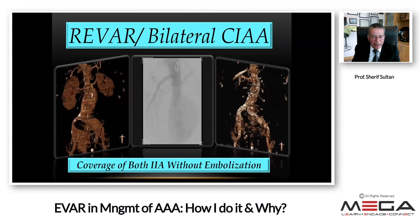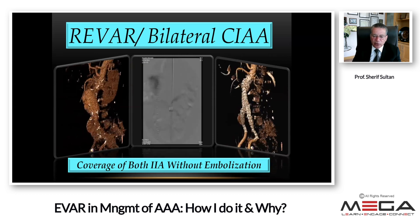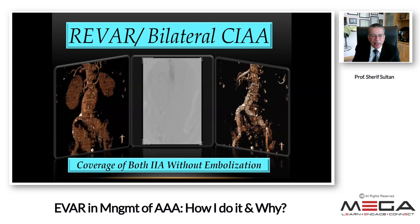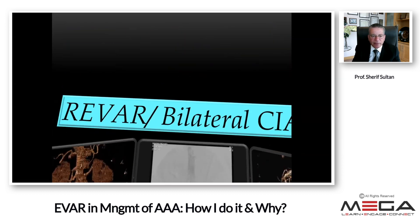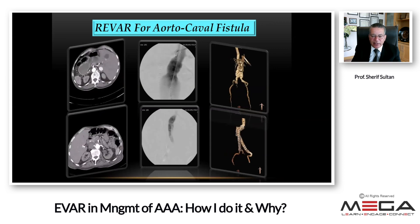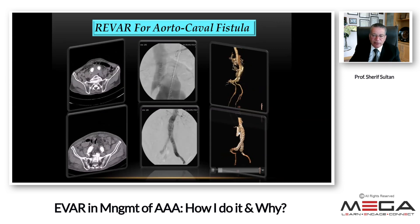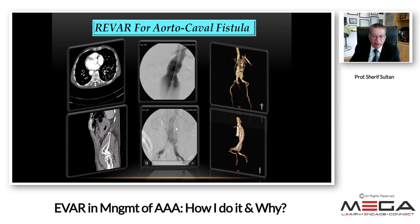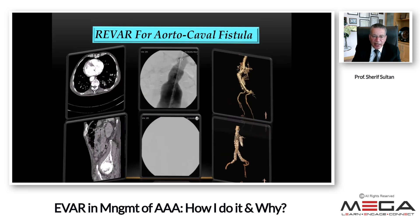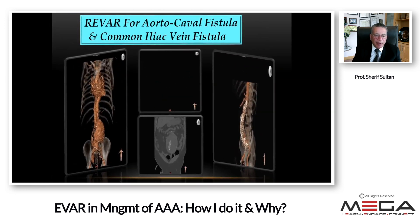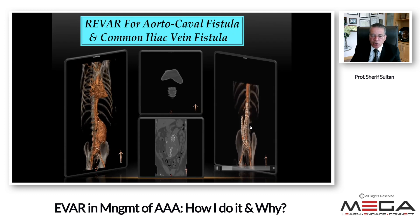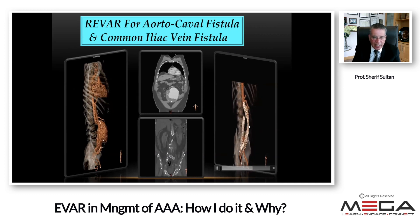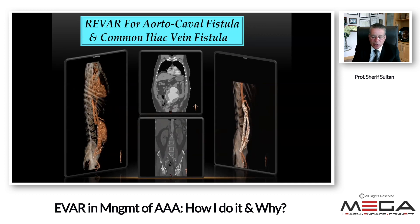For aorto-caval fistulas: cover the aneurysm to the extended iliac — there's no need for internal iliac embolization. You're saving the patient's life. One patient ruptured into the inferior vena cava and we placed a short C-TAG, doing fantastically well. Another patient with extensive rupture had a rebar graft into the inferior vena cava and one into the aorto-iliac — at 10 years postoperatively, he is doing fantastically well.